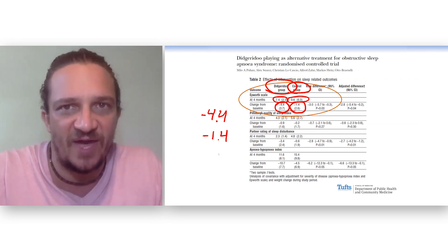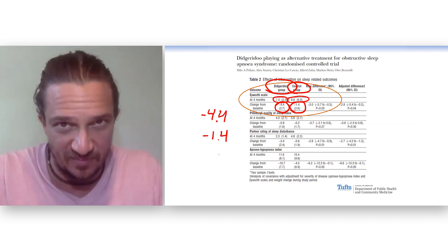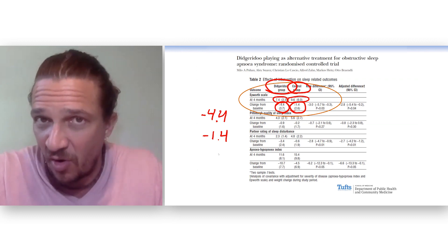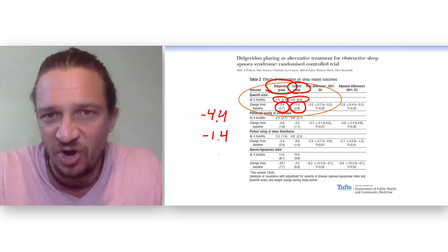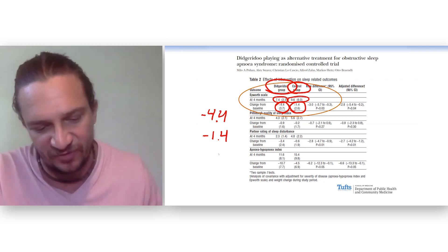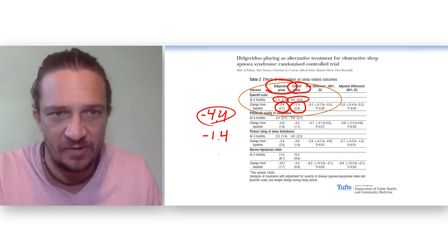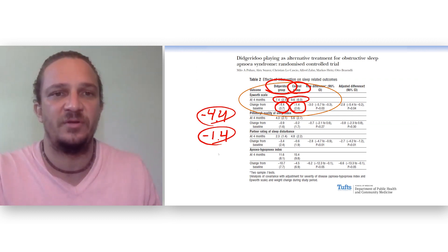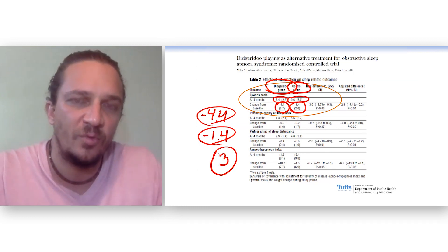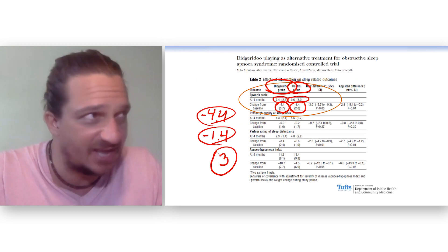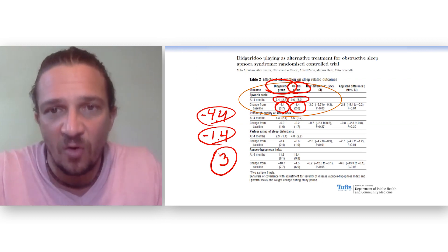This is called the placebo effect. Even if you do something to people that doesn't do anything at all, they'll tend to show some sort of improvement. You'll learn a lot about that in epidemiology. But here, we see the difference between these two groups. This group improved. This group improved. How much more did the didgeridoo group improve? Well, the difference there is 3. We can take that 3 and say, is it statistically significant or not?